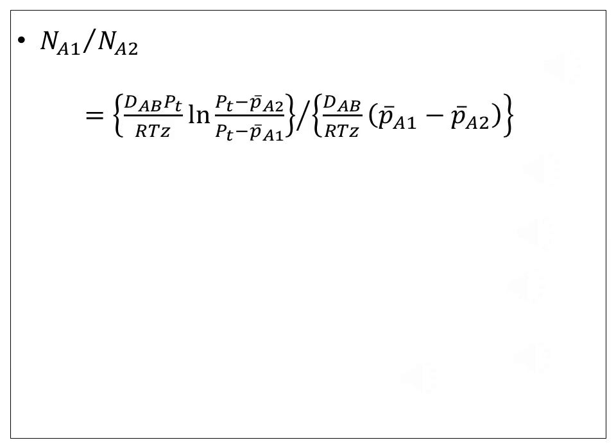Now, we need to calculate the ratio of molar flux of A in case 1 to that in case 2. Therefore, NA1/NA2 = [(DAB Pt)/(RTZ) ln(Pt - PA2)/(Pt - PA1)] divided by [(DAB/RTZ) (PA1 - PA2)].